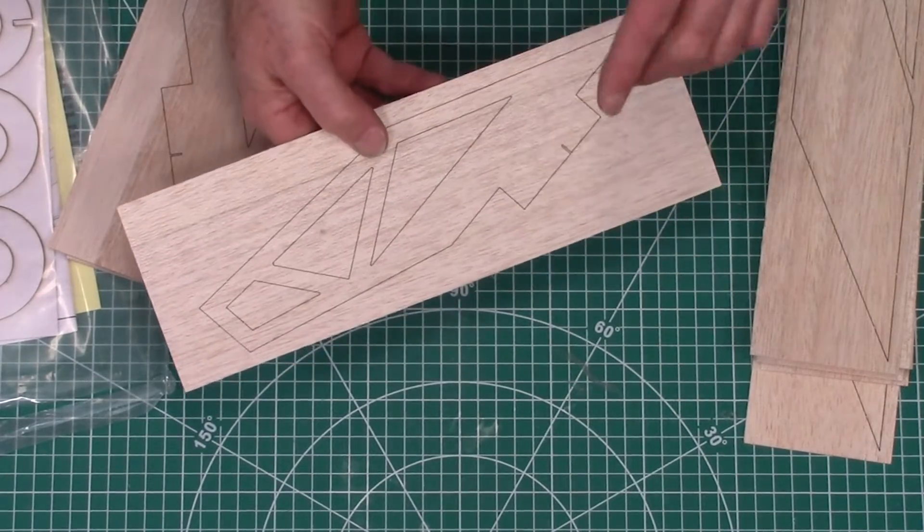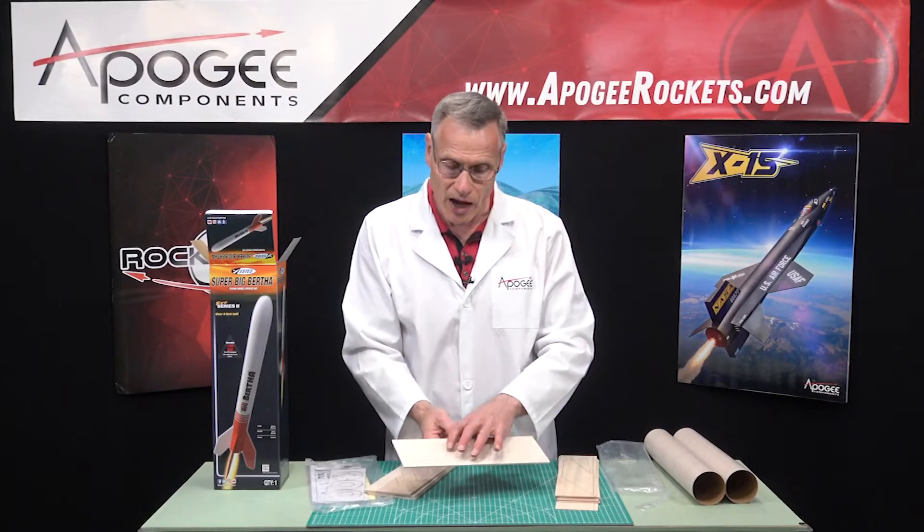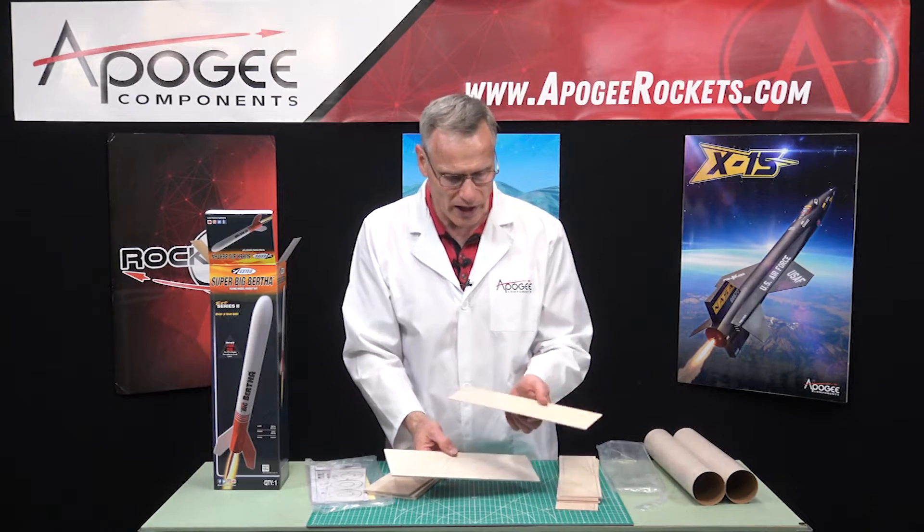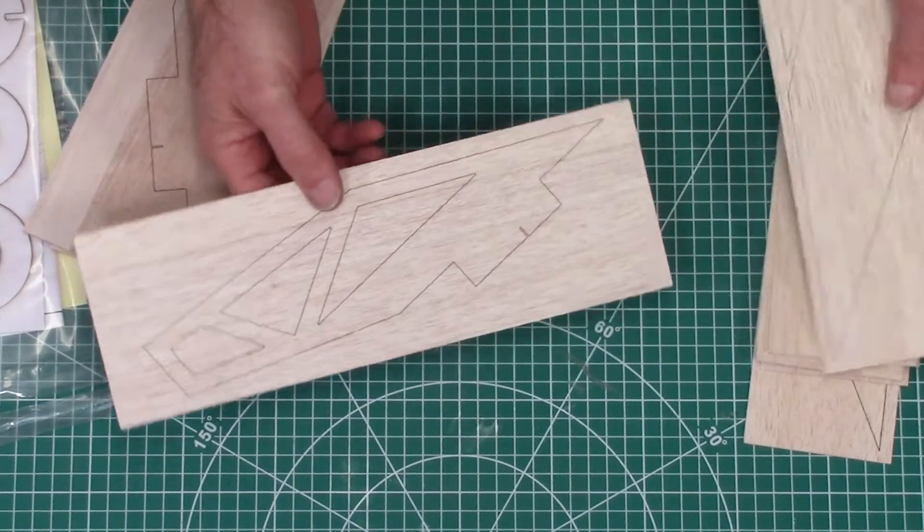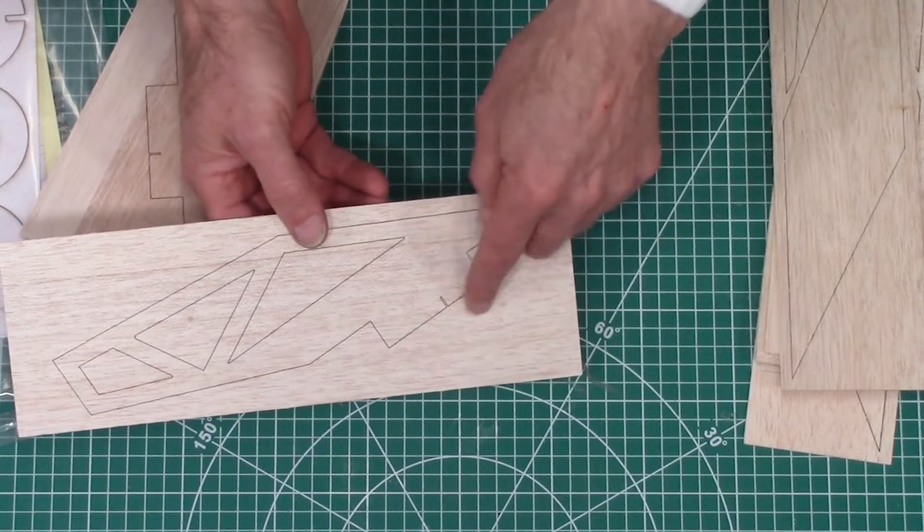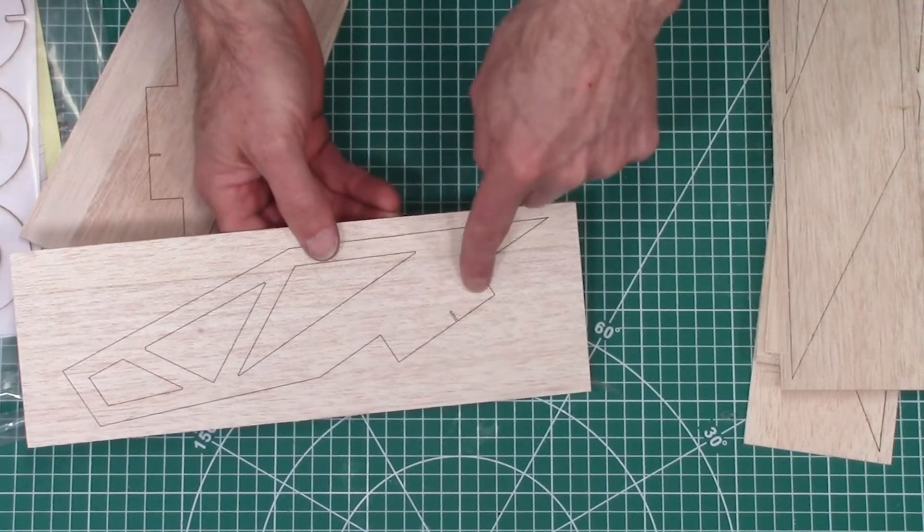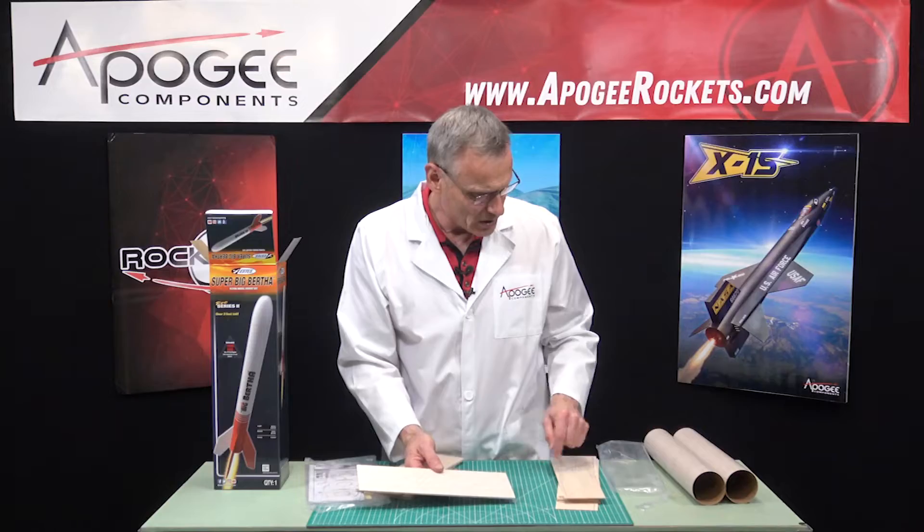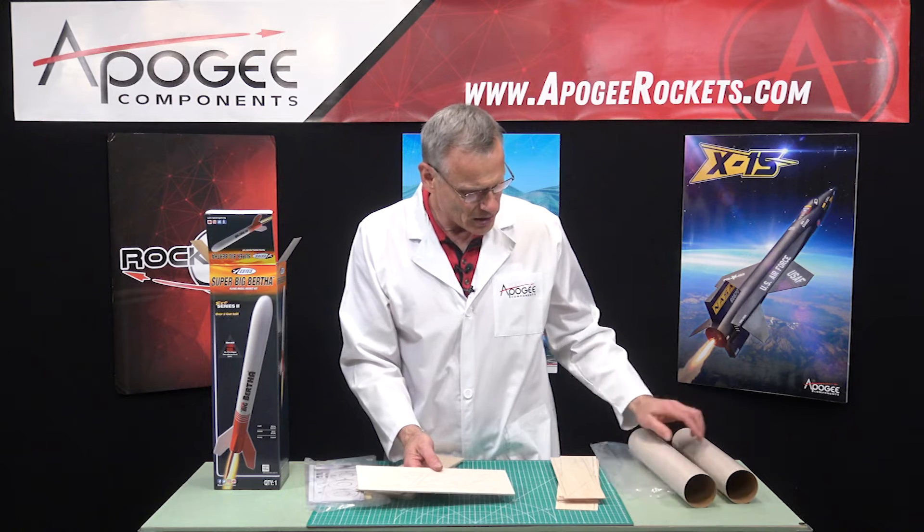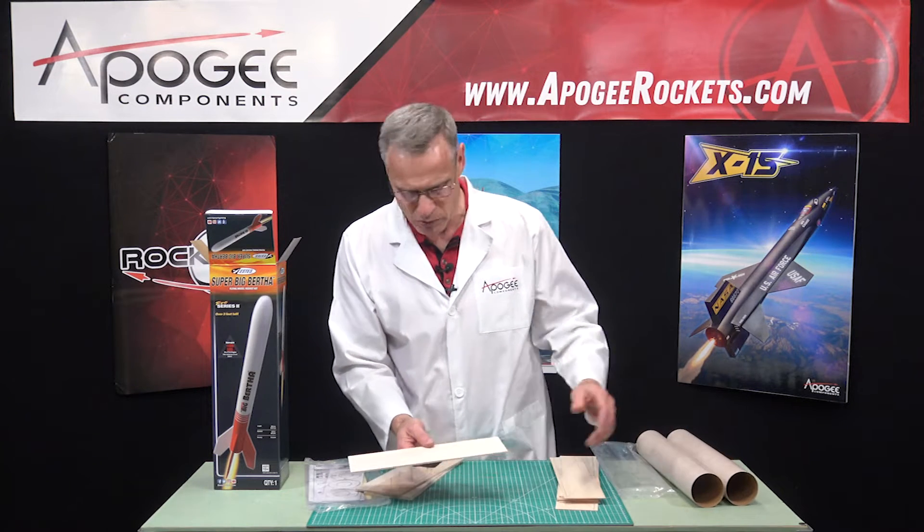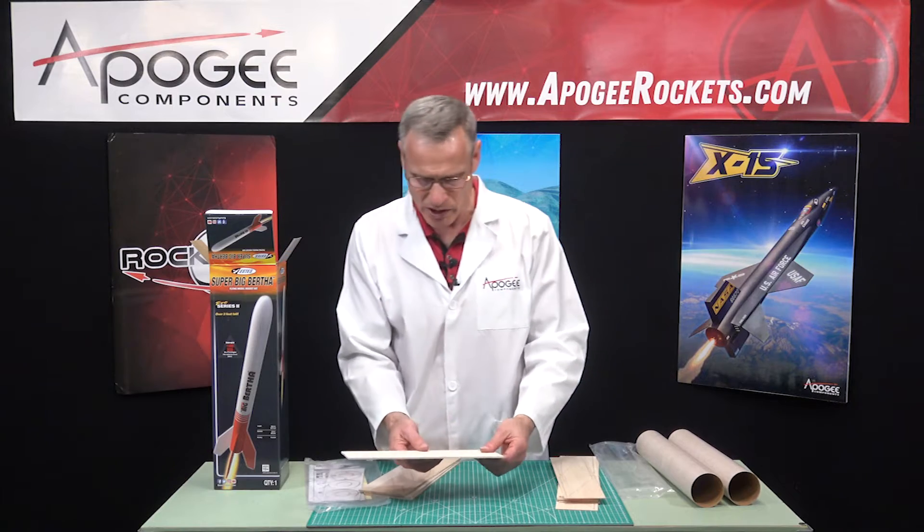So these are lightning holes, so that the fins are actually hollow on the inside, and then it will have this skin on the outside. And looking at this, it does have a through-the-wall fin tab, but I'm not seeing slots on my tube. So there might be more in here that I'm not seeing.